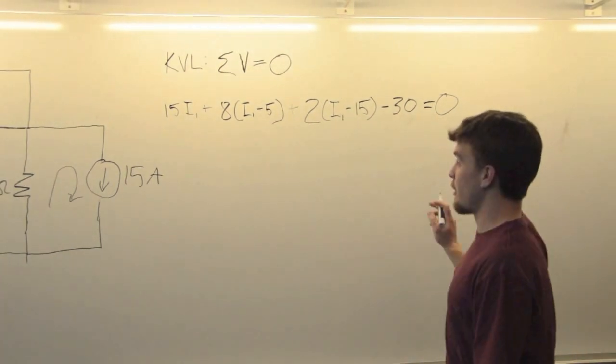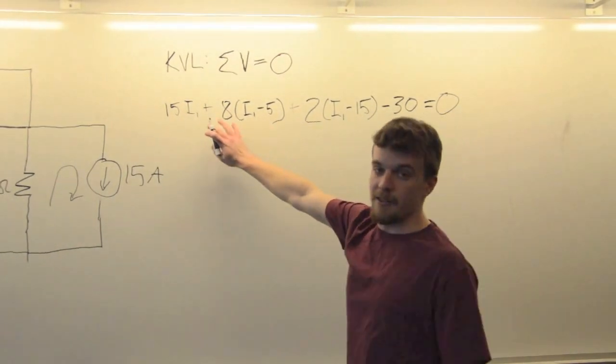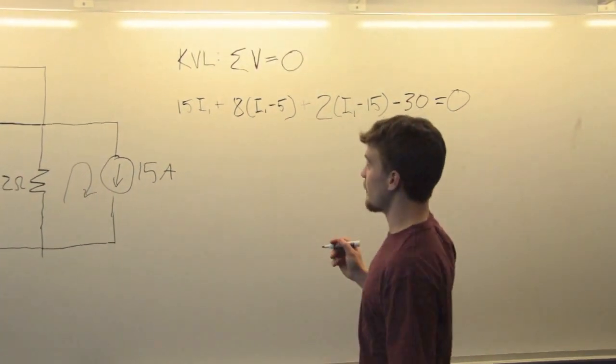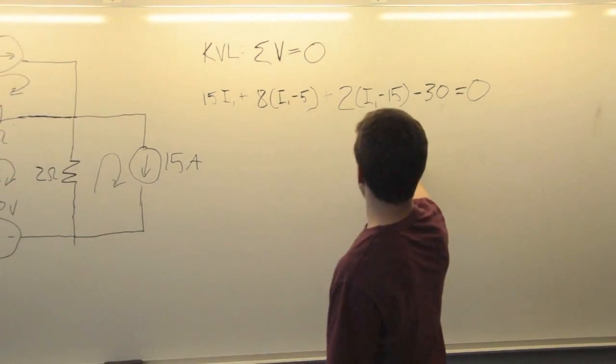Now we're going to rearrange this and solve it. The only unknown in this equation is I1, and that will give us the value of that loop current.